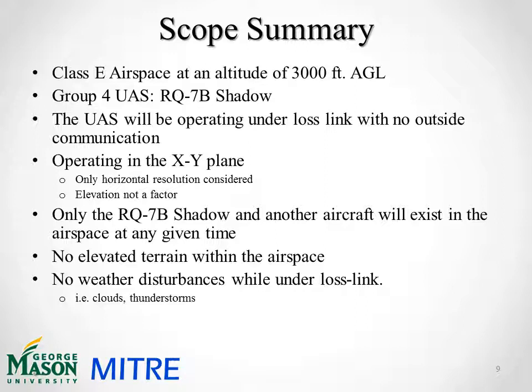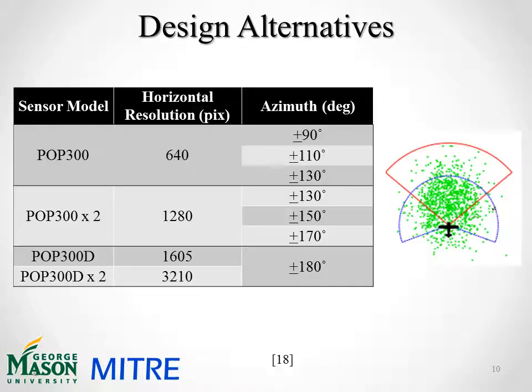To summarize our scenario: we'll be operating in Class C airspace at 3,000 feet above ground level with the RQ-7B Shadow Group 4 UAS, under lost link with no communication with the ground control station pilot or ATC. We will be operating in the XY plane, so only horizontal resolution is considered and elevation is not a factor. Only the RQ-7B Shadow and another aircraft will exist in the airspace at any time, with no elevated terrain and no weather disturbances under lost link. Our design alternatives are for the POP-300 and its updated version, the POP-300D, where the POP-300 has a horizontal resolution of 640 pixels and the POP-300D has 1,605 pixels, evaluated at varying azimuths.